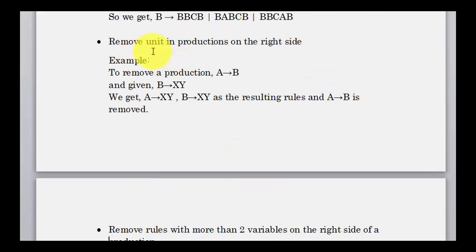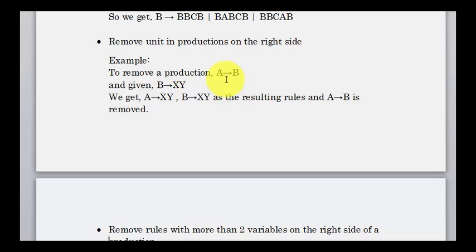Remove unit productions on the right side. Chomsky normal form requires A goes to BC — one variable pointing to exactly two variables, not more and not less. So if there is A goes to B alone, and B goes to XY, we write A goes to XY directly and remove the unit production. We skip the intermediate B and go straight to A goes to XY.